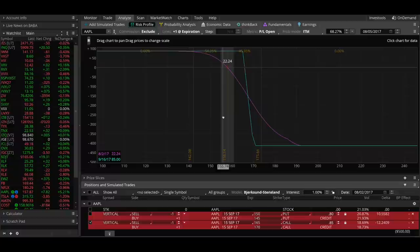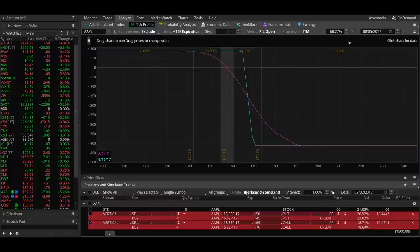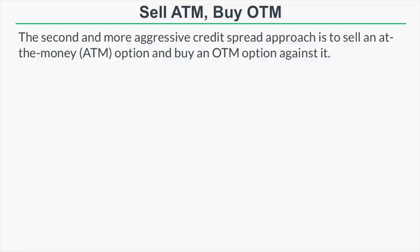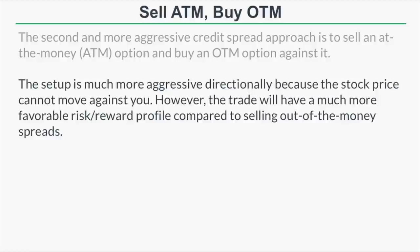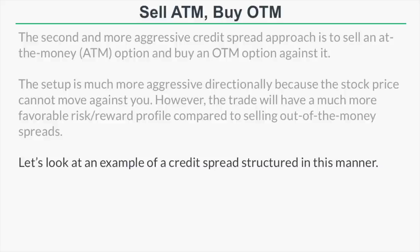Now that we've looked at selling an out-of-the-money spread, let's look at the second method of selecting strike prices when trading credit spreads. The second and more aggressive approach is to sell an at-the-money option and buy an out-of-the-money option against it — sometimes referred to as selling an at-the-money spread. This structure is much more aggressive directionally because the stock price cannot move against you much, or at all. However, the trader will have a much more favorable risk-to-reward profile compared to selling an out-of-the-money spread.